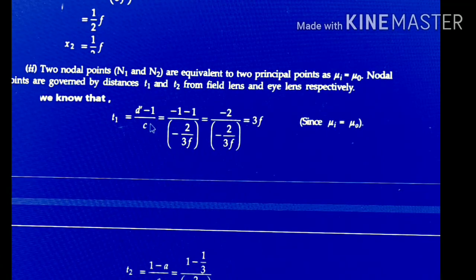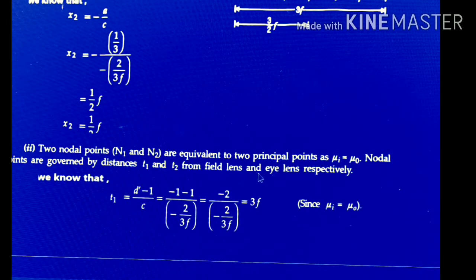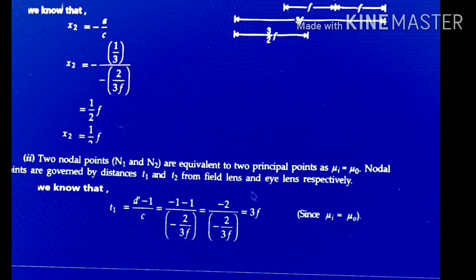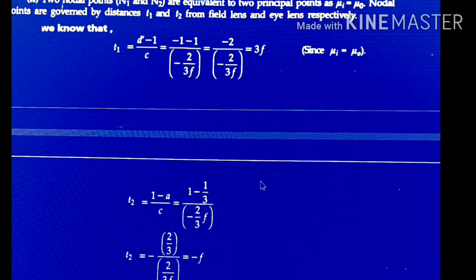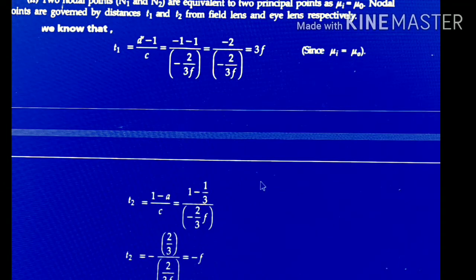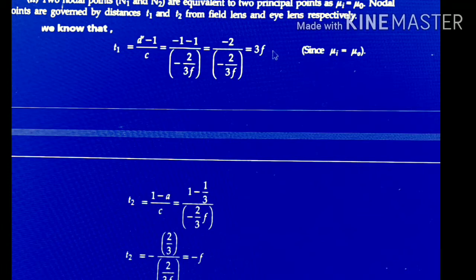The next two cardinal points are the two nodal points N1 and N2. The two nodal points are equivalent to the principal points when μ_i = μ_0. The nodal points are governed by distances T1 and T2 from the field lens and eye lens respectively. T1 = (D' − 1)/C = (−1 − 1)/(−2/3F) = 3F.